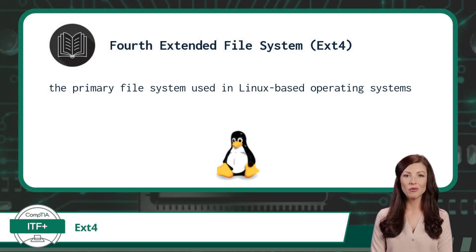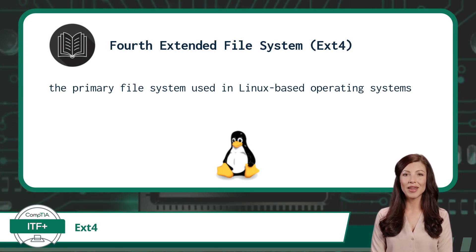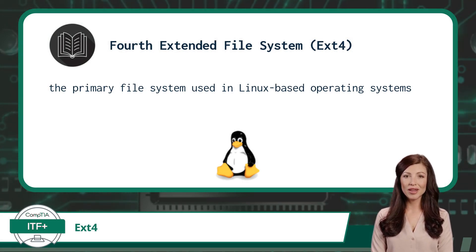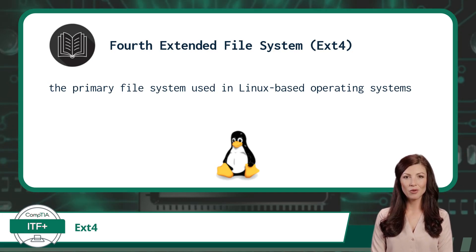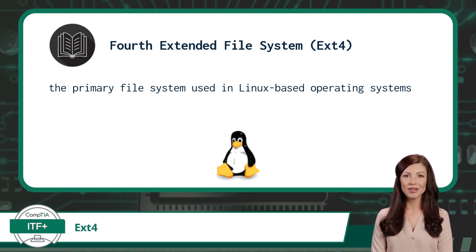EXT4 stands for Fourth Extended File System. It is the primary file system used in Linux-based operating systems. EXT4 is designed to provide improved performance, scalability, and reliability compared to its predecessor, EXT3.